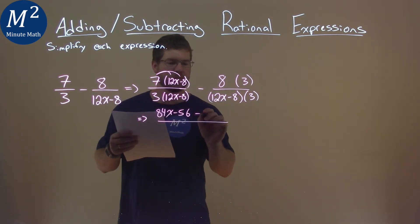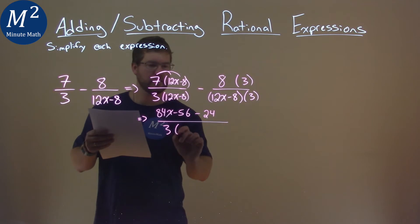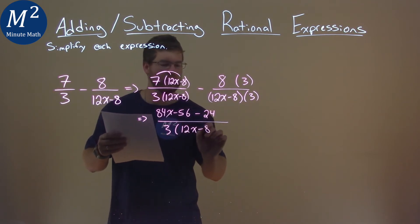Same thing here: 8 times 3 is 24, so we subtract 24. Our denominator is 3 times (12x-8).